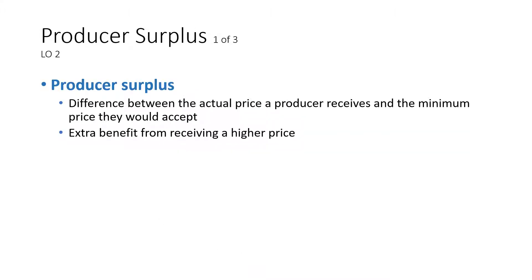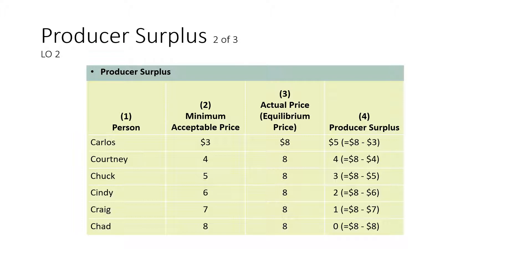Producer surplus occurs and is measured by the difference between the actual price a producer receives and the minimum price they are willing to accept. Any price they receive above the minimum price is considered a surplus. Looking at the table, the minimum price each producer is willing to accept is listed there. The equilibrium price — what it's actually selling at — is listed there. So each producer would incur a surplus except for Chad, whose surplus would be right at zero.